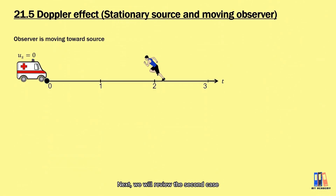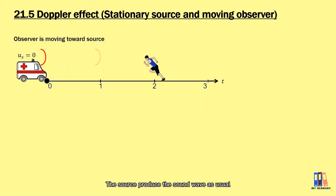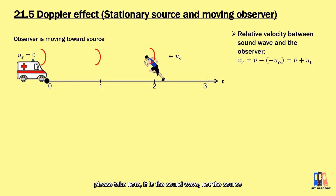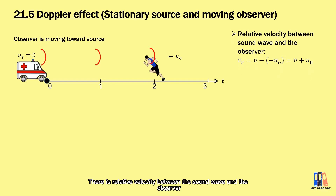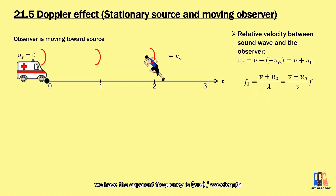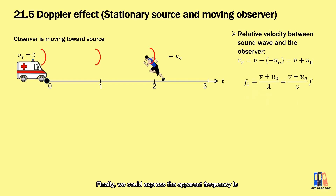Now let's consider the second case where the observer is moving toward the stationary source. The source produces sound waves as usual, so there is no apparent wavelength change. However, there is a relative velocity between the observer and the sound wave — equal to v plus u when the observer is approaching the source. The sound seems faster relative to the observer, so the apparent frequency equals (v plus u) over lambda. Substituting lambda as v over f, we get apparent frequency equal to (v plus u) over v multiplied by the original frequency.